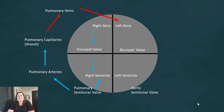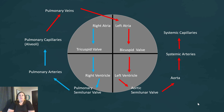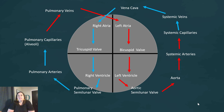On the left side, blood goes from the left atrium through the bicuspid valve to the left ventricle, then leaves through the aortic semilunar valve to the aorta. The aorta distributes blood through the systemic arteries to all the body's tissues and then to the systemic capillaries, where oxygen is dropped off and carbon dioxide is picked up. The now-deoxygenated blood returns through the systemic veins — specifically the vena cava — back into the right atrium to start the cycle again. This forms two loops: pulmonary and systemic circulation.